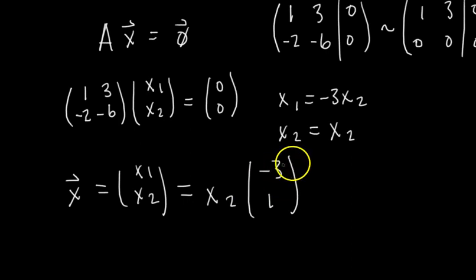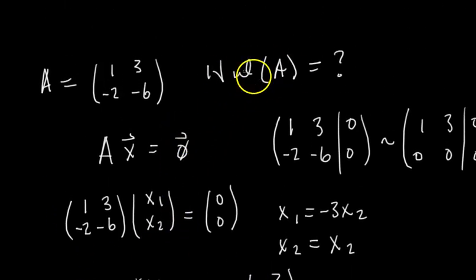And so we plug in for x1, x2, and now factor out the x2. So you get something like this. So look, all the linear combinations of just this one vector make up the x vectors, and the x vectors are the null space of A.